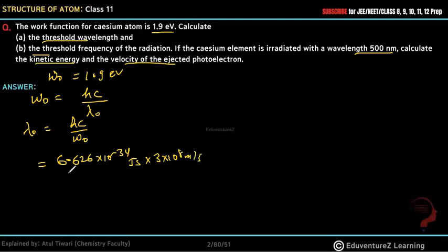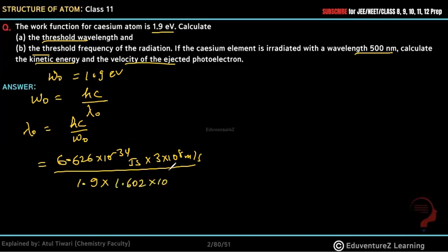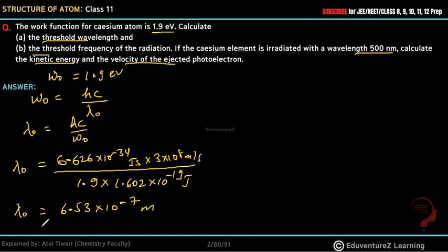The value of W₀ is given in electron volts. To convert electron volts to Joules, we multiply: 1.9 × 1.602 × 10⁻¹⁹ Joules. Calculating λ₀, we get 6.53 × 10⁻⁷ meters, which can be written as 653 nanometers. So the threshold wavelength λ₀ = 653 nm.